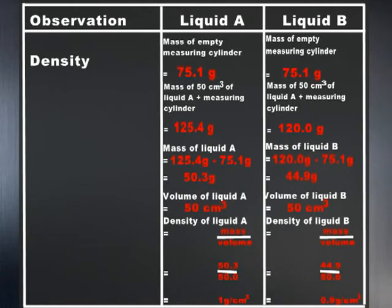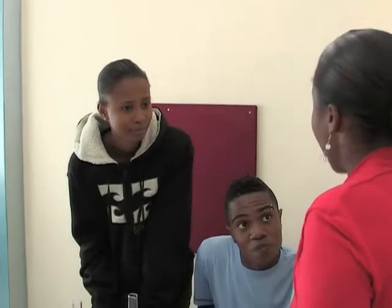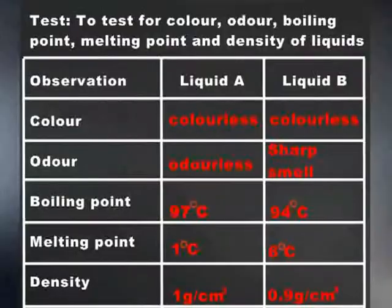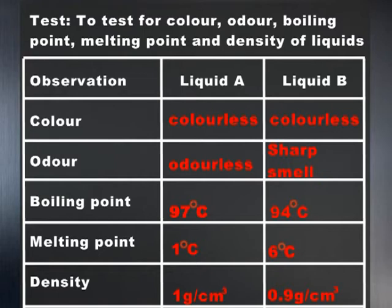Are you done? Yes ma'am. Well done. So can you conclude which liquid is water? I think liquid A is water because it is colourless, odourless, has a boiling point of 97 degrees Celsius, a melting point of 1 degree Celsius, and a density of 1 gram per cubic centimetre. Yes, I agree with Susie. You two are correct. Remember, we will still need to do the chemical test for water.